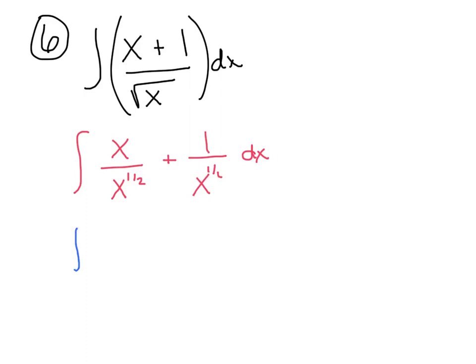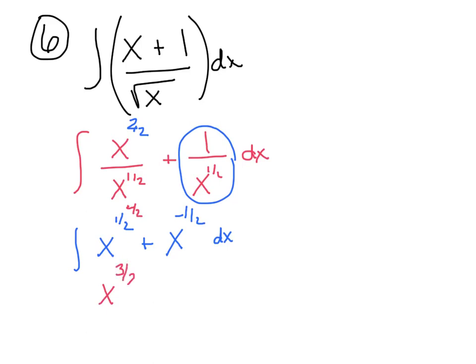Cleaning it up further: x to the first divided by x to the 1 half is x to the 1 half, by subtracting exponents. And 1 over x to the 1 half is x to the negative 1 half dx. Now I'll integrate: add 1, giving x to the 3 halves, multiply by the reciprocal 2 thirds. Plus x to the 1 half, multiplying by the reciprocal 2. Don't forget your plus c.